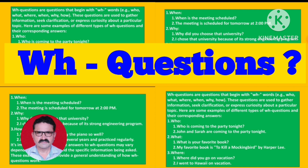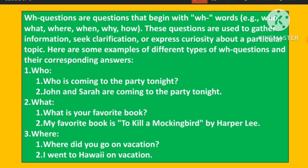Today we are going to study WH questions. Let us start. WH questions are questions that begin with a WH word — for example: who, what, where, when, why, and how. These questions are used to gather information, seek clarification, or express curiosity about a particular topic. Here are some examples of different types of WH questions and their corresponding answers.